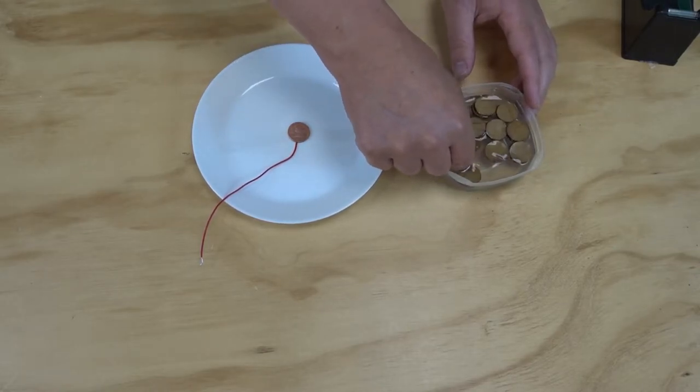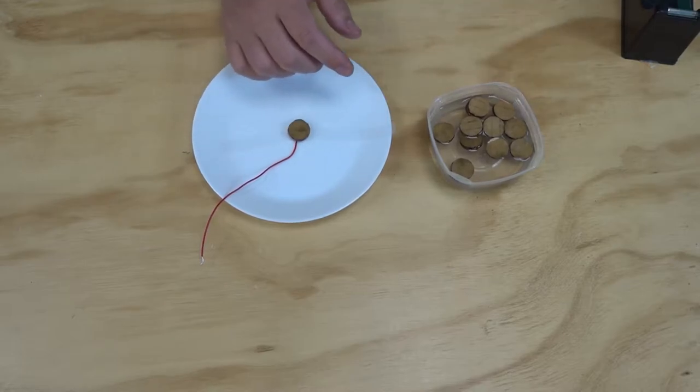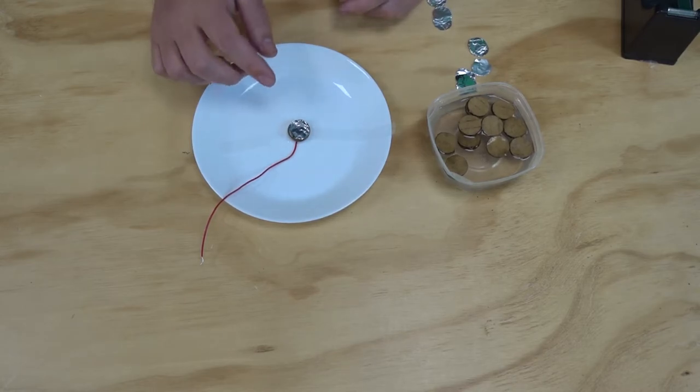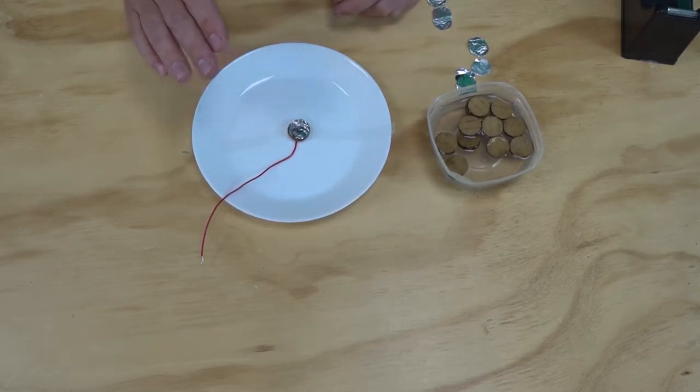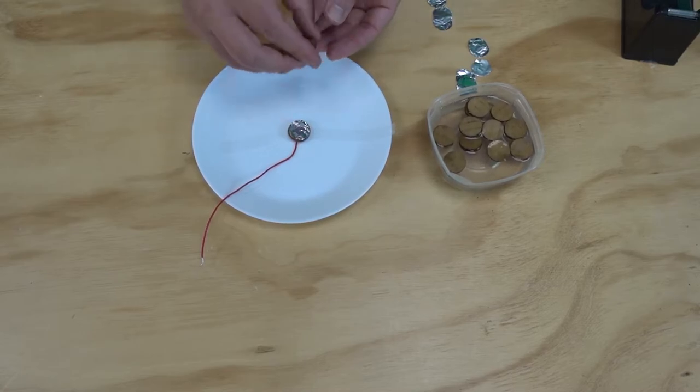Next, I'm going to grab one of my soaked cardboard discs, making sure that it's nice and wet and place that on top, and then one of my aluminum discs. Then I'm just going to repeat this pattern of coin, cardboard, aluminum until I run out of materials.